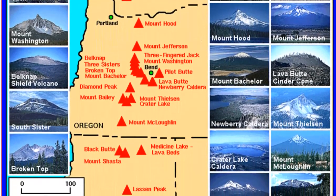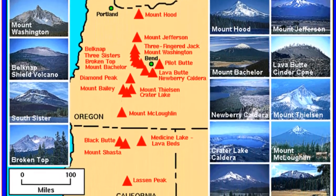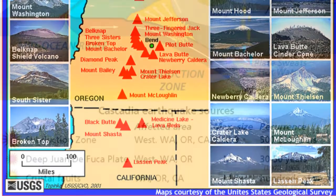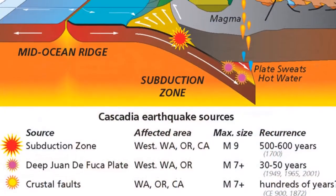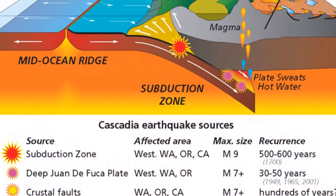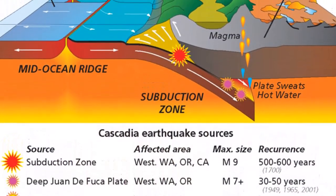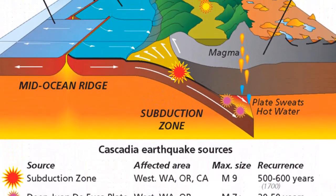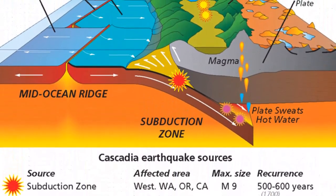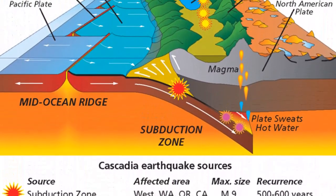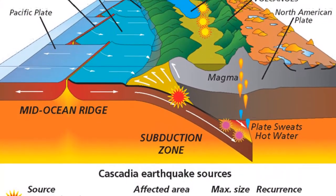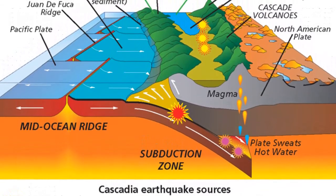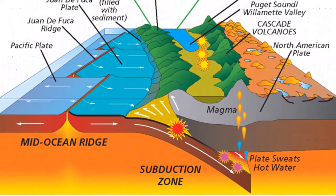Exposures of intrusive igneous rocks occur in many places, including Mount Washington, New Hampshire; Stone Mountain, Georgia; the Black Hills of South Dakota; and Yosemite National Park in California.